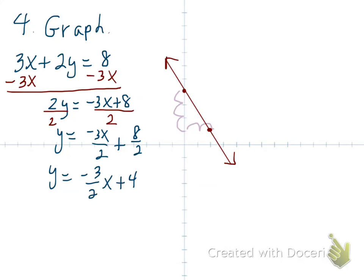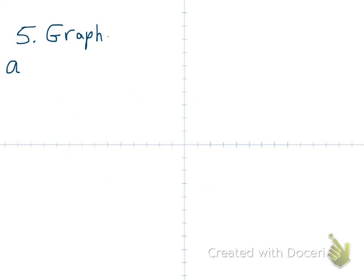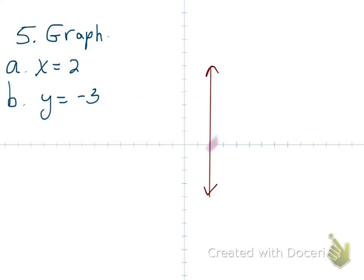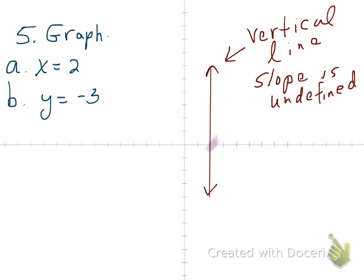We know there are infinitely many solutions to a linear equation. Now the last problem: graph the two special cases, x equals 2 and y equals negative 3. For x equals 2, it's going to be a vertical line that goes through that point. Think about the slope — it's a vertical line, so the slope would be undefined.